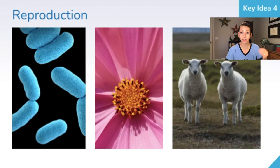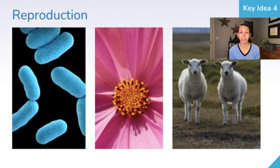Other organisms reproduce sexually and have half of the genetic information come from two different parents — one half from one parent and one half from another — and those two haploid cells are combined. You might have heard of cloning before, which is the idea that we make an identical genetic copy of one organism. Dolly the sheep was a famous clone.